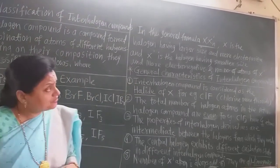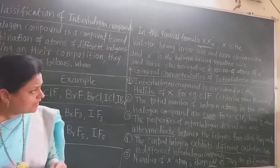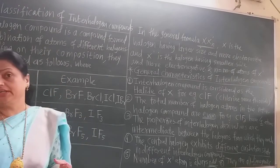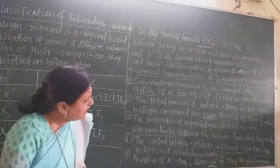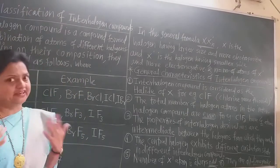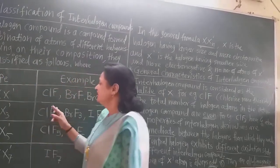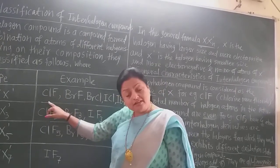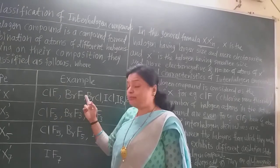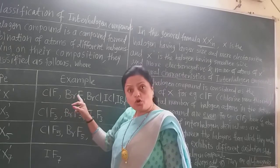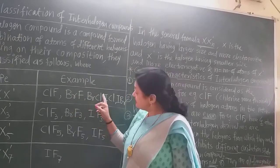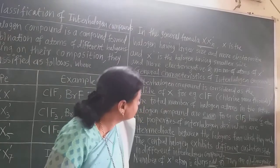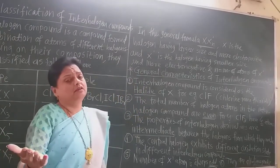Now let us see the general characteristics of interhalogen compounds. There are totally six characteristics — maybe asked for three marks. The first characteristic is that interhalogen compounds are considered as the halide of X. For example, ClF is the fluoride of chlorine, so it is chlorine monofluoride. The X' always becomes the halide.